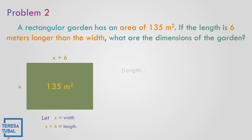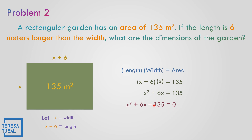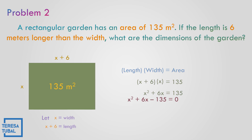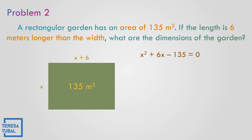The formula for the rectangle is length times width. The length is equal to x plus 6, and the width is equal to x, and the area equals 135. So let us solve: x times x is x squared, 6 times x is 6x, equal to 135. Change the sign — that becomes negative 135. Bring down x squared, bring down 6x. The product is negative 135, and the sum should be positive 6.